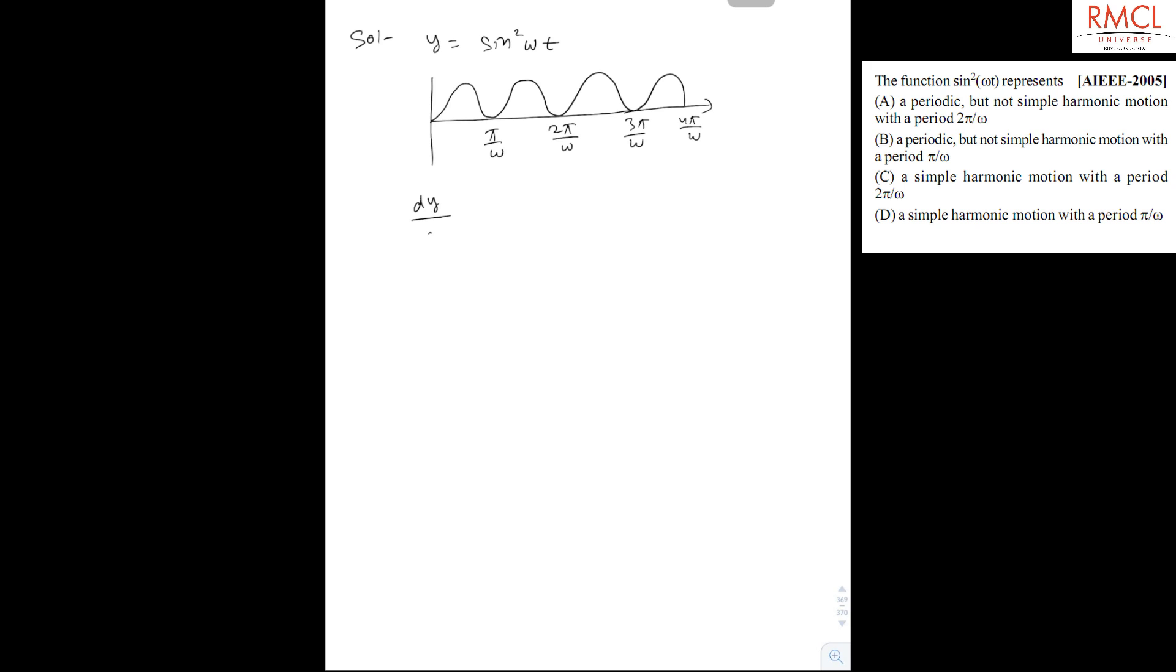And dy by dt, it is 2 omega sin omega t cos omega t, so it is omega sin 2 omega t.